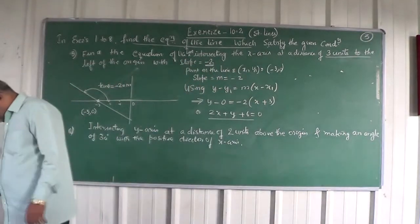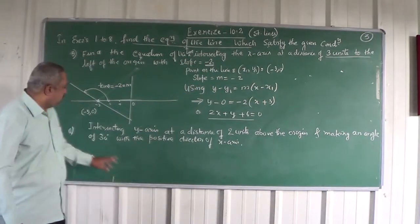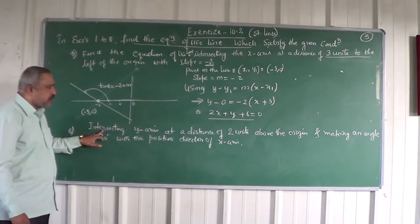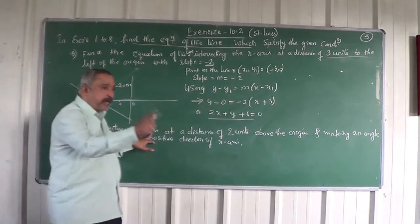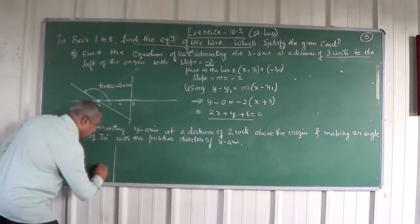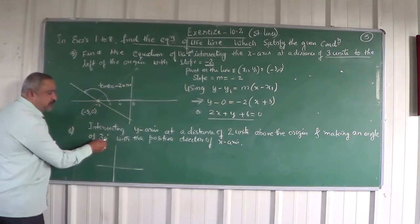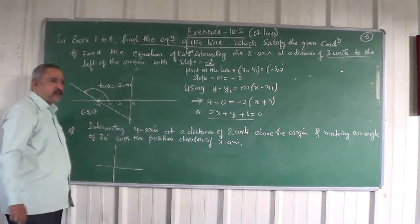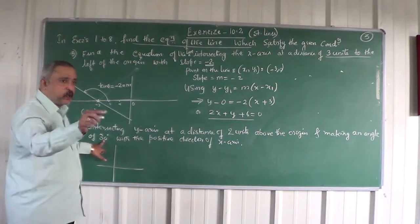Okay. Now, the next problem. You want to find the equation of the line intersecting y-axis at a distance of 2 units above the origin, and at an angle of 30 degrees with the positive direction of x-axis. 30 degrees is an acute angle.